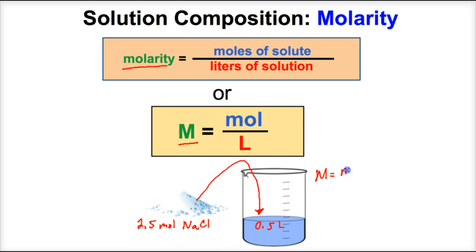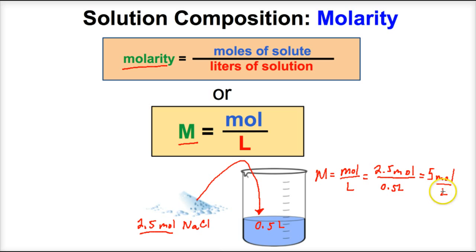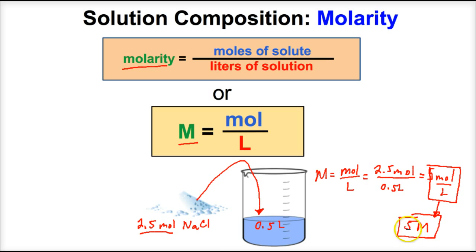To determine the molarity, we take the moles of dissolved solute and divide by the total liters of solution. In this problem we have 2.5 moles dissolved in 0.5 liters, so 2.5 divided by 0.5 gives us 5 moles per liter. This means for every one liter of this solution there are 5 moles of sodium chloride dissolved in it — we have a 5 molar solution, written as 5 M.